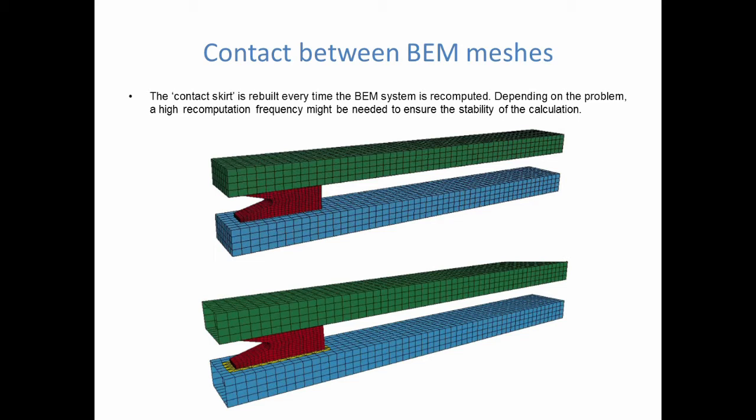This contact search and stitching — removing the BEM faces and building the skirt mesh — happens only whenever the BEM system is recomputed. So you might need to recompute the BEM system rather often in cases where there is contact between conductors in order to ensure stability, which in turn might have an important impact on your calculation times. Recomputing the BEM system is the costliest part of the EM solve, so turn EM contact on only when it's necessary.